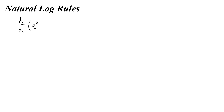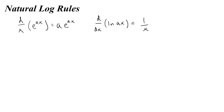Next are the natural log rules. The derivative with respect to x of e to the ax equals a times e to the ax. And the derivative with respect to x of the natural log of ax is equal to 1 over x — the a disappears. You will learn why this is true in a calculus class using the difference quotient and the limiting process, but for our purposes we just need to trust that these work.